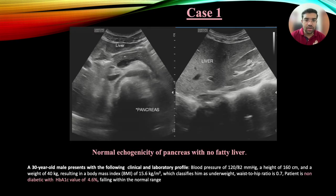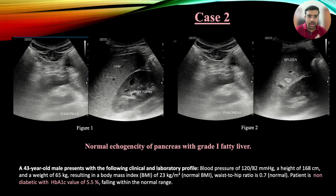Case 1 showed echogenicity of the pancreas similar to that of the liver — normal echogenicity with no fatty liver — and the patient was found to be non-diabetic. In Case 2, Grade 1 fatty liver was present, so pancreatic echogenicity was compared with the spleen and kidney and found to be similar, indicating normal echogenicity with associated Grade 1 fatty liver. The patient was also non-diabetic.